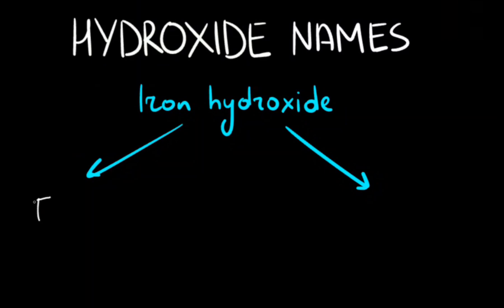For example, iron hydroxide can be found in two forms: FaOH times 2 and FaOH times 3.